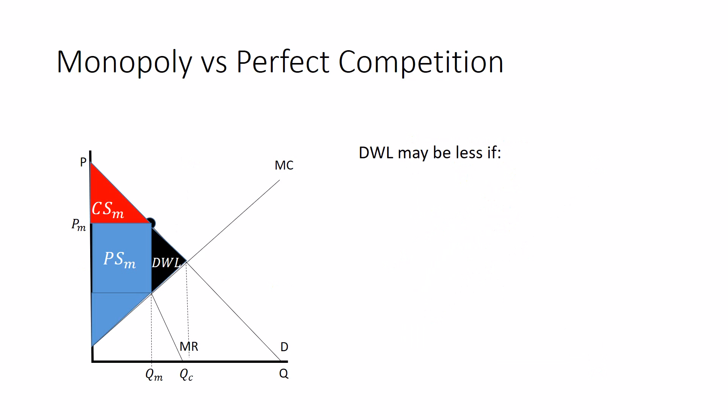A couple of quick plugs. Deadweight loss might be less if the monopolist can do some fancy pricing stuff. Later on, we might talk about price discrimination or two-part tariffs or block pricing or all kinds of other pricing schemes.